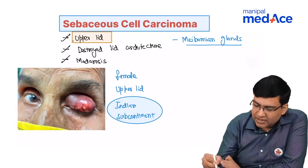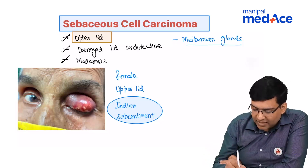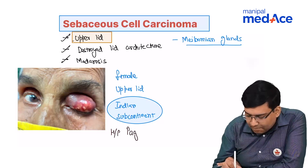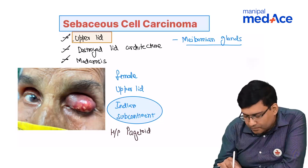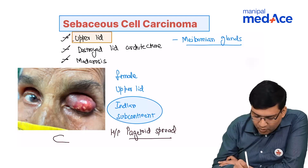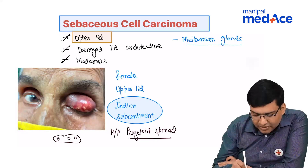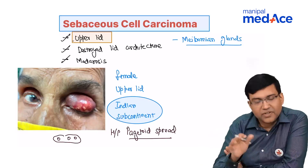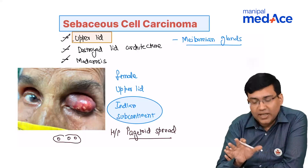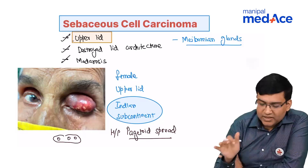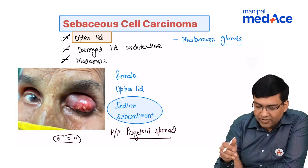One last feature to remember about sebaceous cell carcinoma: on histopathology you can see pagetoid spread. This means there may be one lesion here and another distant lesion, with the space between the two lesions appearing normal. That is how pagetoid spread manifests in sebaceous cell carcinoma.